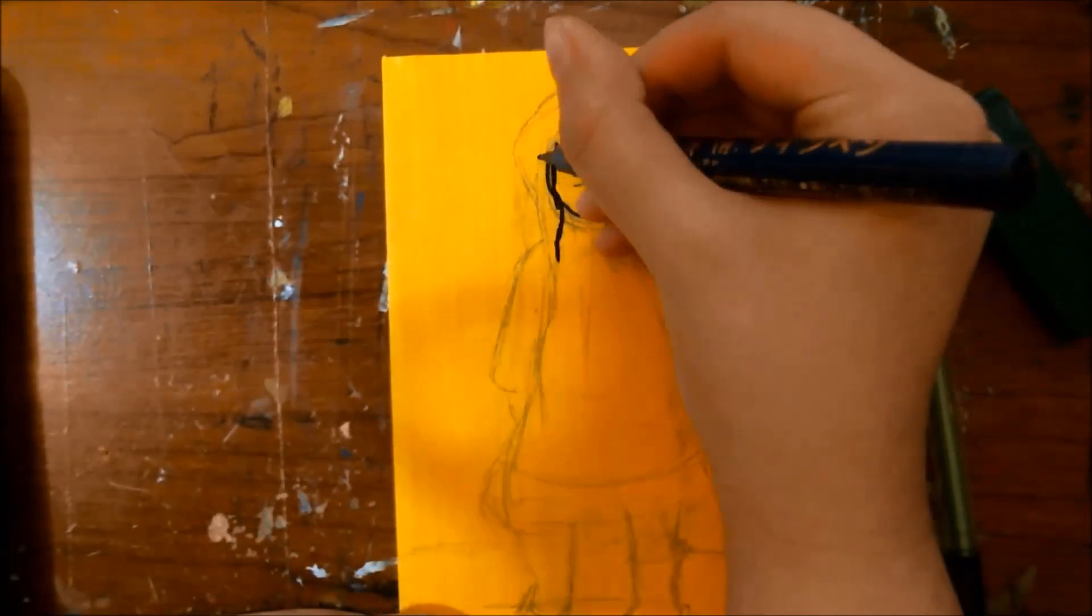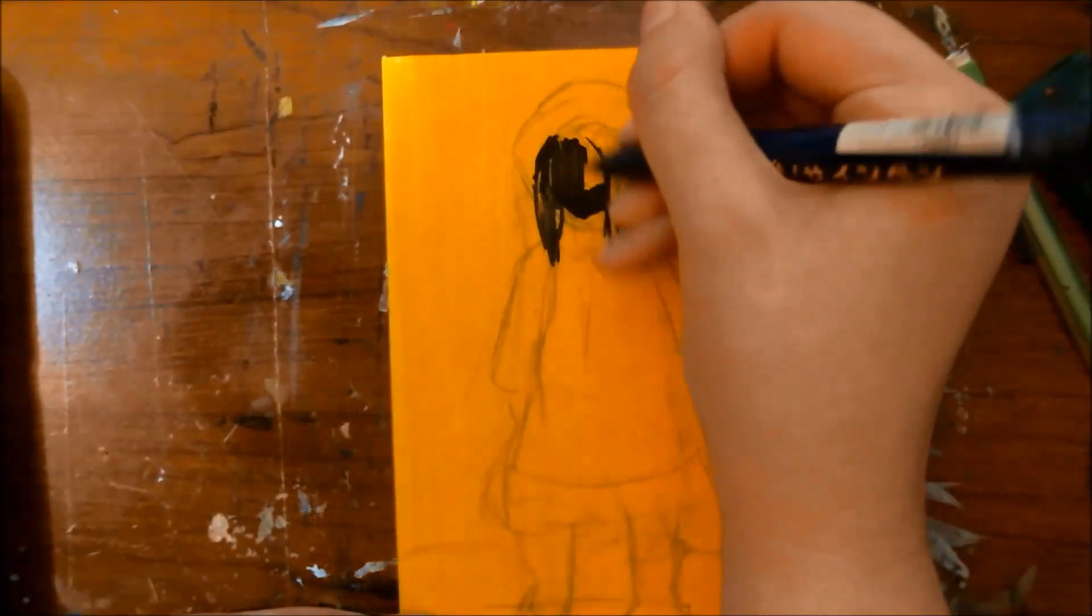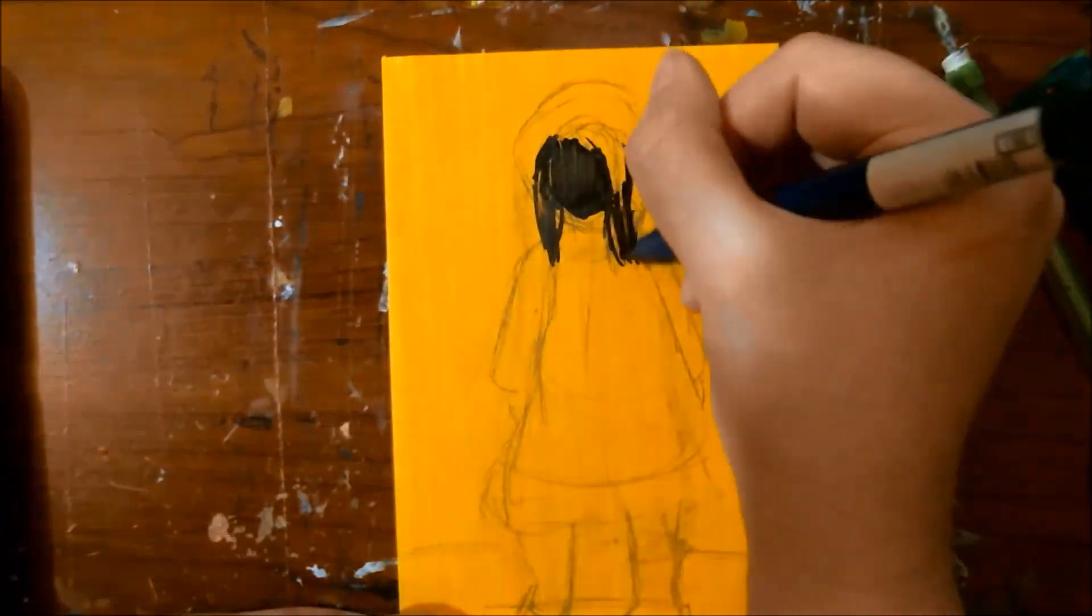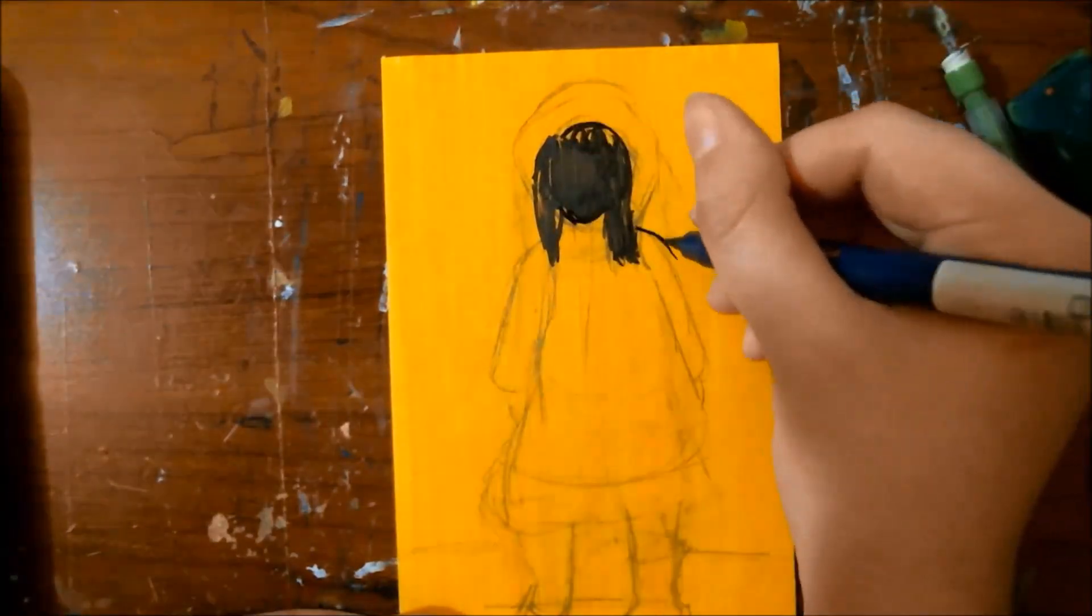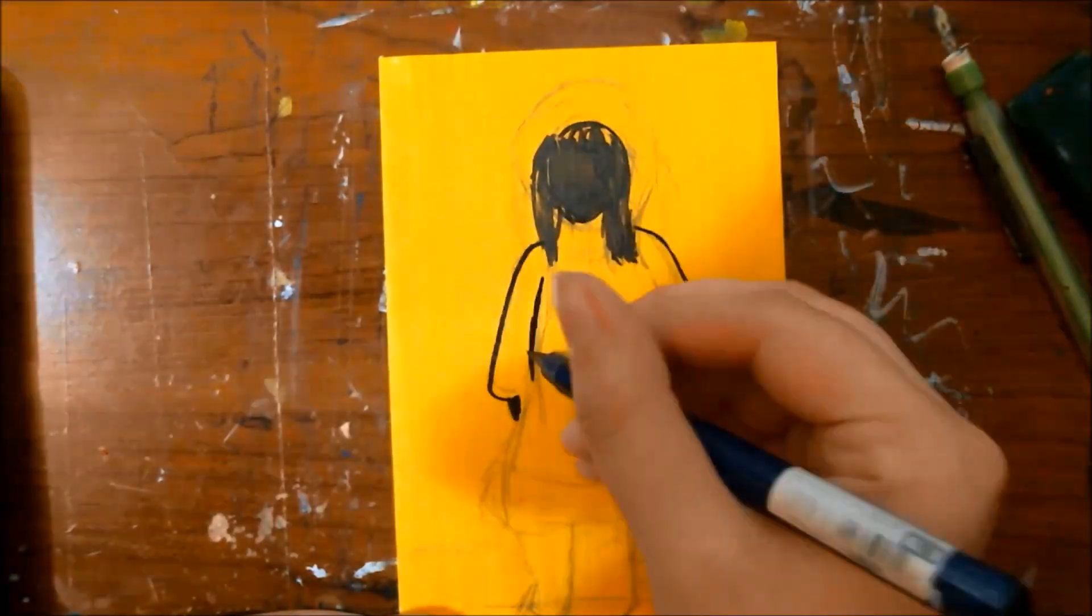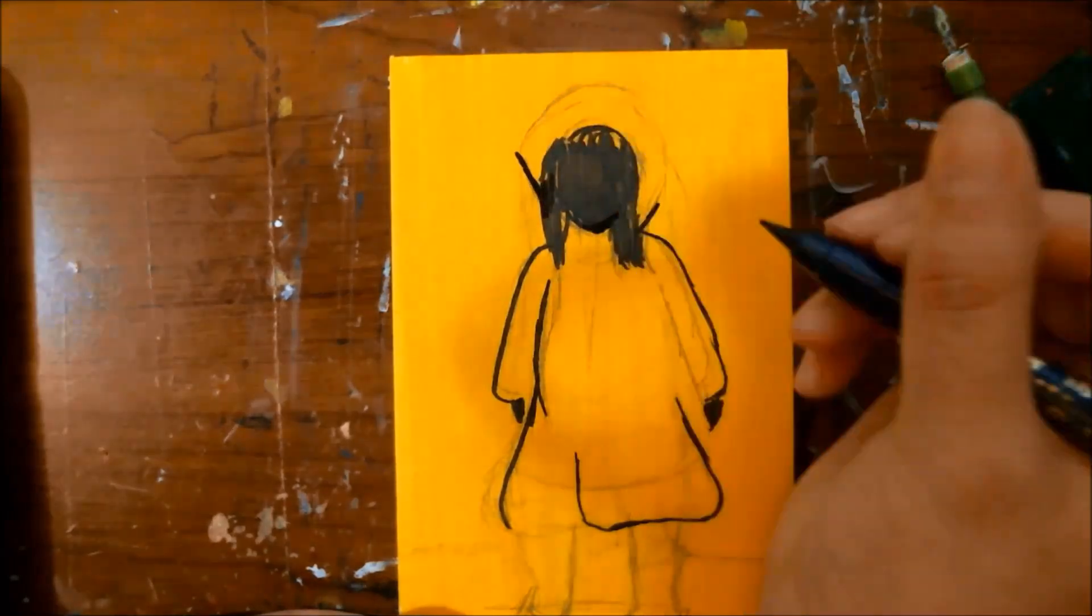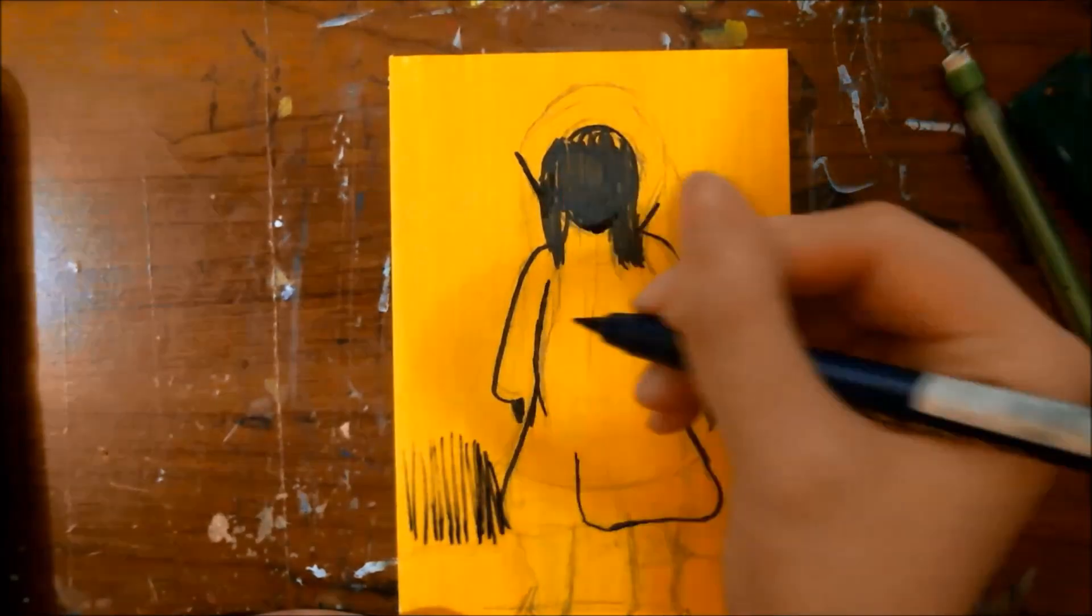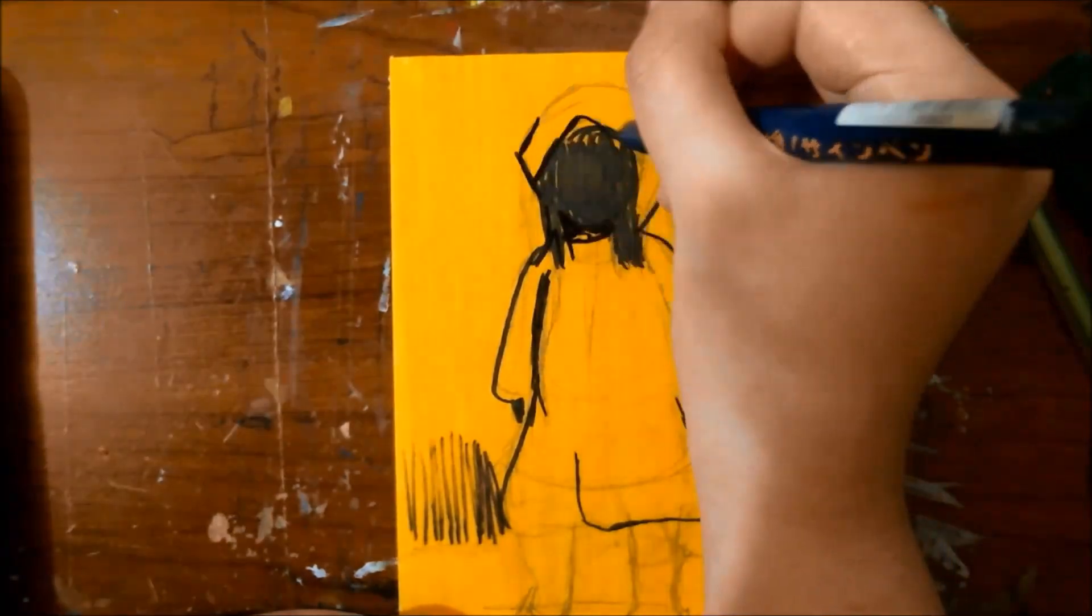At this point I am bringing in a fine-tipped Kuretake Zig marker. It has a bunch of Japanese writing on it. I do not know specifically what model it is but it is a different one than the other one I've been mostly using. I wanted to make any parts of her actual body that we're showing just straight up black and then give her some glowing red eyes just to add to that otherworldly, eerie, ghosty type feel.